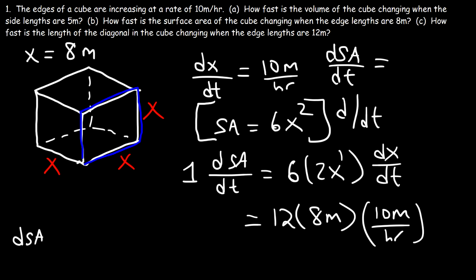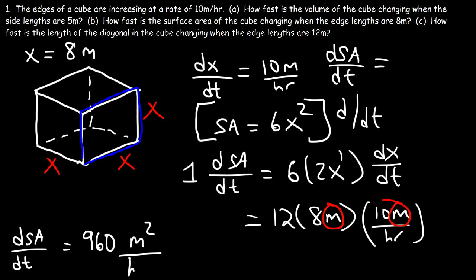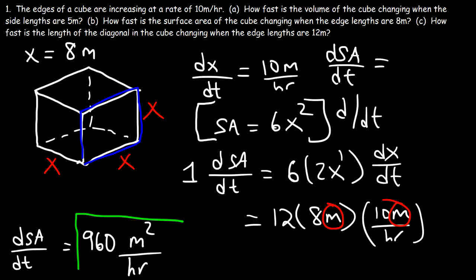So ds/dt is going to be 960. What are the units? We have meters times meters per hour, which is square meters per hour. So ds/dt is 960 square meters per hour. That's it for Part B.